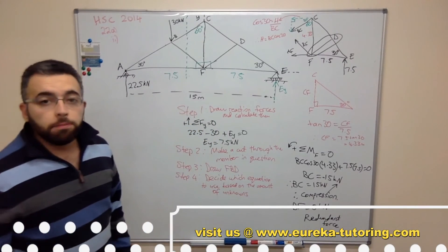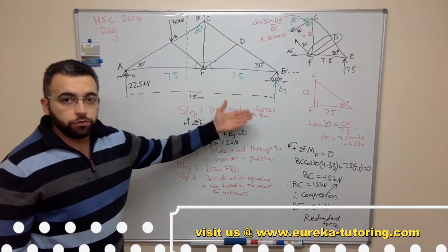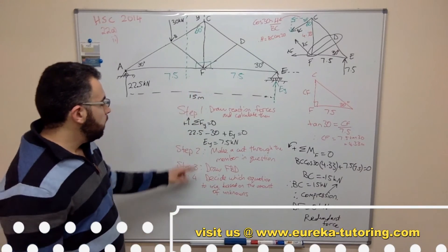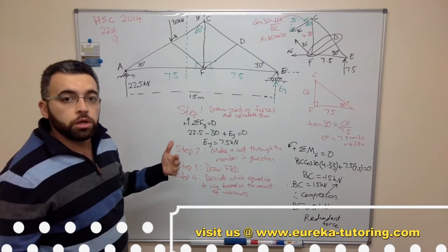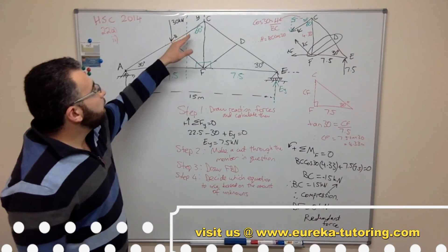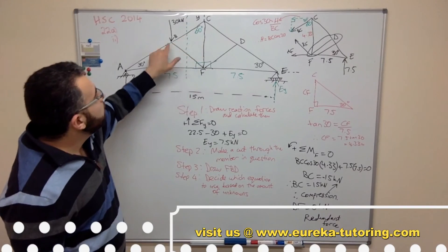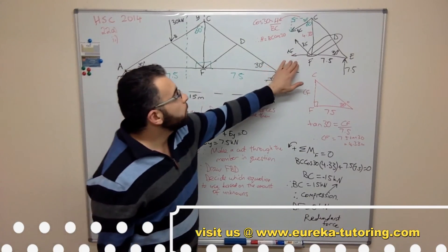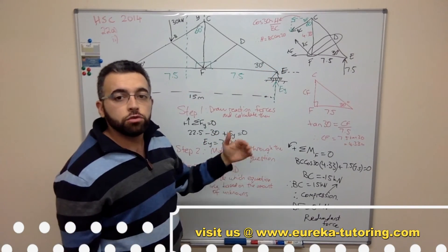Okay, so to wrap it up, first thing you do is you draw your reaction forces and then calculate those forces. So in this case we used sum of forces in the vertical direction or the y direction. And then we made a cut through member BC - that's the member that we're interested in. And by making a cut you develop or you introduce forces. So you have force at BC, force in BF, force in AF. Consider the right hand side, so draw your free body diagram.